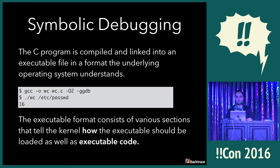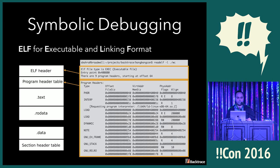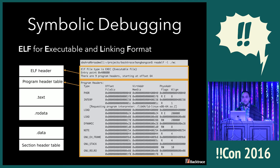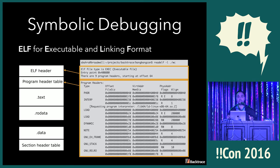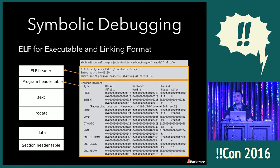This will be compiled into an executable format that the kernel understands, so the kernel can load this and execute it. The format typically used on modern Unix is ELF, which stands for the Executable and Linking Format. It includes information about how memory should be laid out, what regions of the file should be mapped in, and if your program is dynamically linked, you may need to load other files as well.